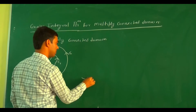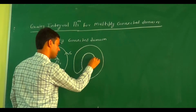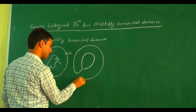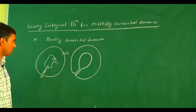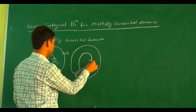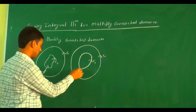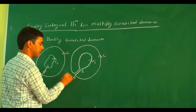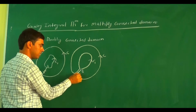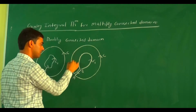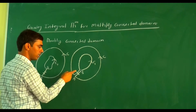Suppose we start from here. This becomes one path and here is another path. The orientation of the outer curve is C and the inner curve is C₁. One orientation is outward and the second is inward. The cut is AB.